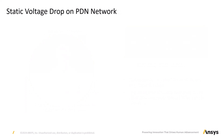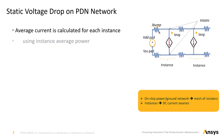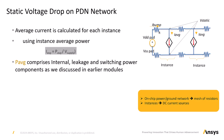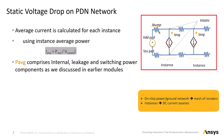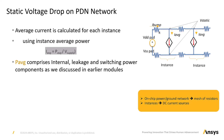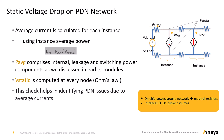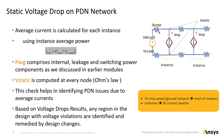Static voltage drop on PDN network. Each instance is replaced with a constant average DC current source. The average current is calculated as I_average = average power divided by V_supply. P_average comprises internal leakage and switching power components. The PDN grid is represented as a mesh of resistors connected from the bump to the instance power or ground pins. Note that the reactive components of the PDN grid such as capacitance and inductance are not modeled in static analysis. The static analysis only captures the voltage drop due to the resistive grid component. An ideal DC voltage is attached to the power and ground pads, and the circuit is analyzed to compute static voltage values at each node.